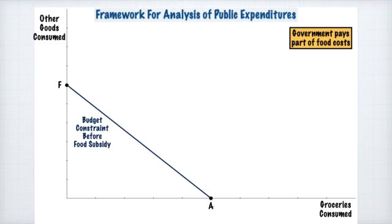Now let's say the government institutes a program where they pay a portion or percentage of an individual's food costs. The example of this is the old food stamp program that the United States government initiated, whereby individuals could purchase food stamps that could only be used to purchase food, but at a discounted rate. For example, they could purchase $100 worth of food stamps for $70.